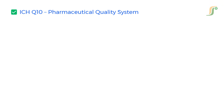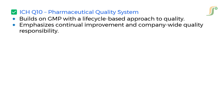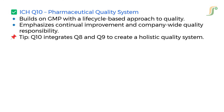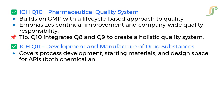ICH Q10 — Pharmaceutical Quality System — builds on GMP with a life-cycle-based approach to quality. It emphasizes continual improvement and company-wide quality responsibility. Important tip: Q10 integrates Q8 and Q9 to create a holistic quality system. ICH Q11 covers the development and manufacture of drug substances, including process development, starting materials, and design space for APIs, both chemical and biotech.